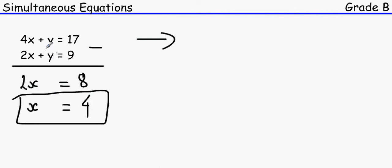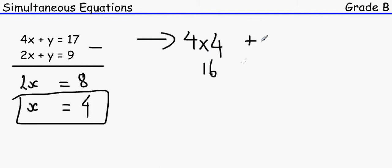Now we use that information to find y. We have 4x, and since x is 4, we write 4 times 4, because in algebra there's always an implied multiplication between a number and a letter. So 4 times 4 plus y equals 17, which simplifies to 16 plus y equals 17.